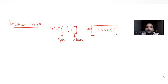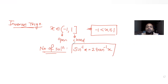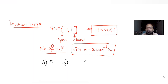For this range of values of x, we have been asked to find how many solutions are possible for the expression sin⁻¹x = 2tan⁻¹x. The four options given are: A) 0, B) 1, C) 2, D) 3. Let's solve this.